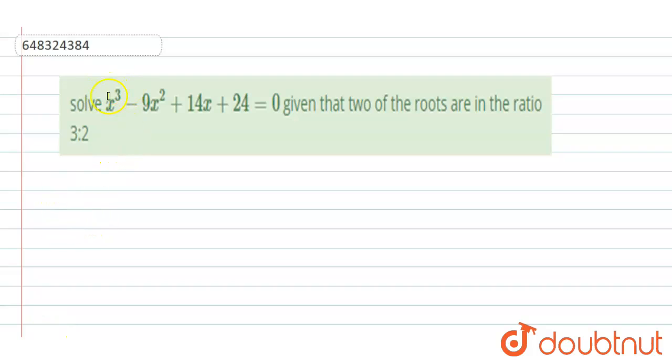Hello everyone, our question is: solve x³ - 9x² + 14x + 24 = 0, given that two of the roots are in the ratio 3:2.